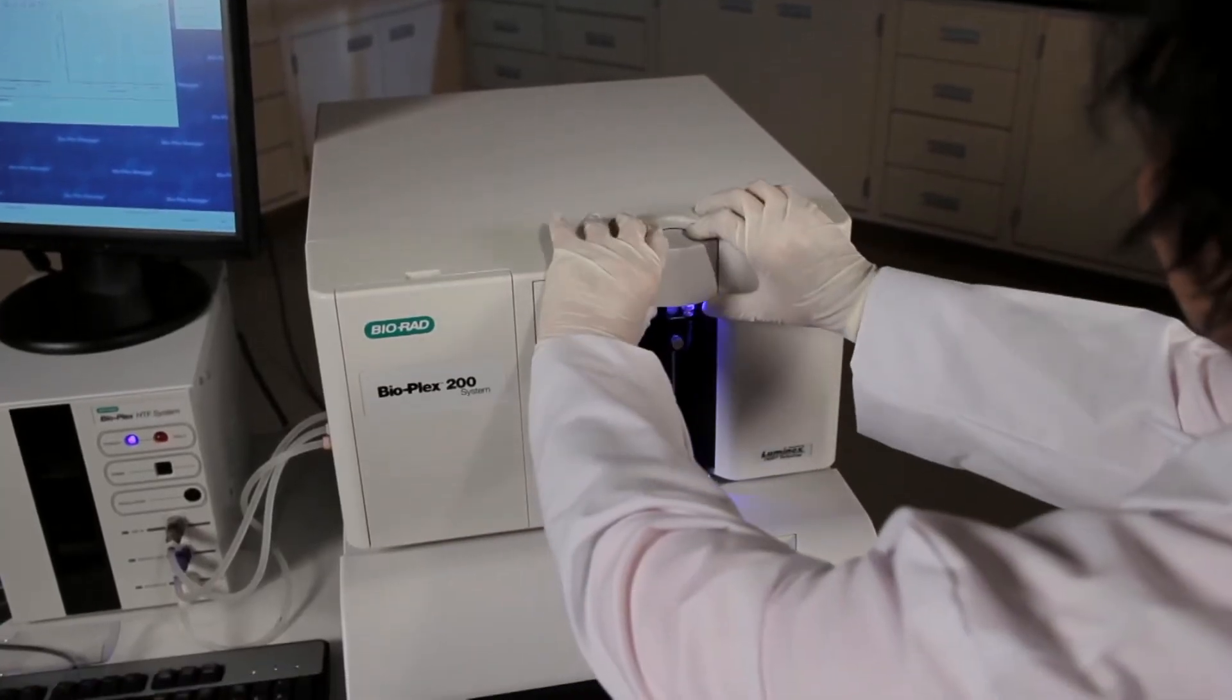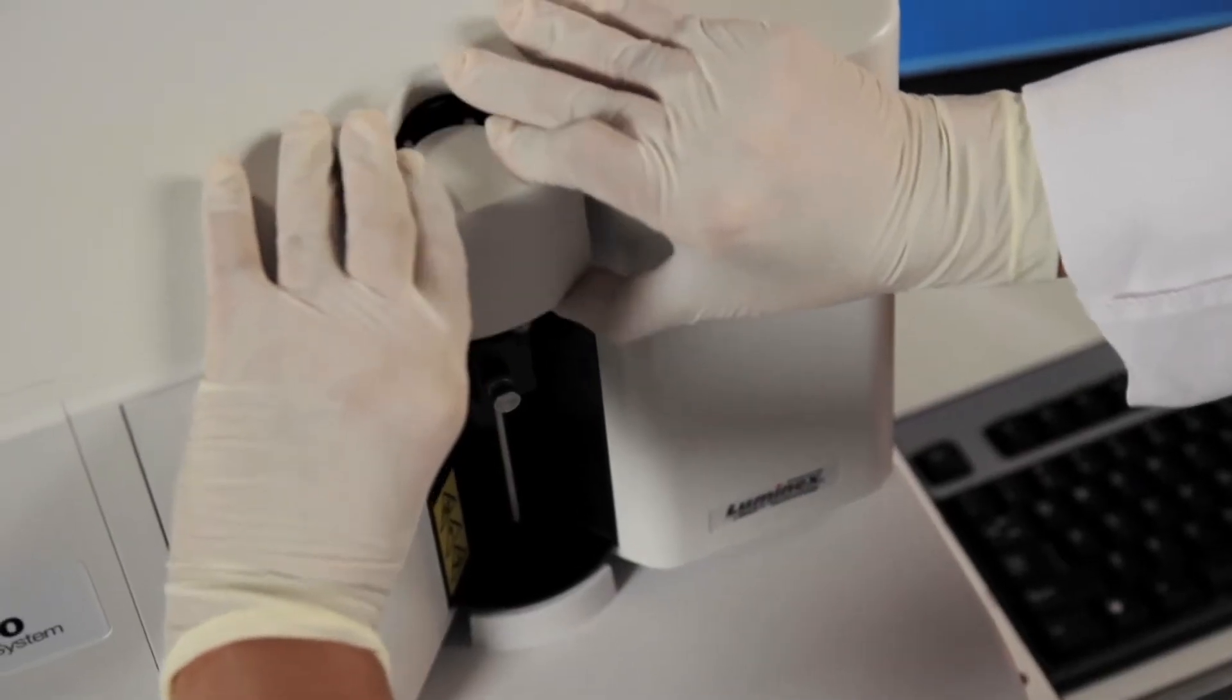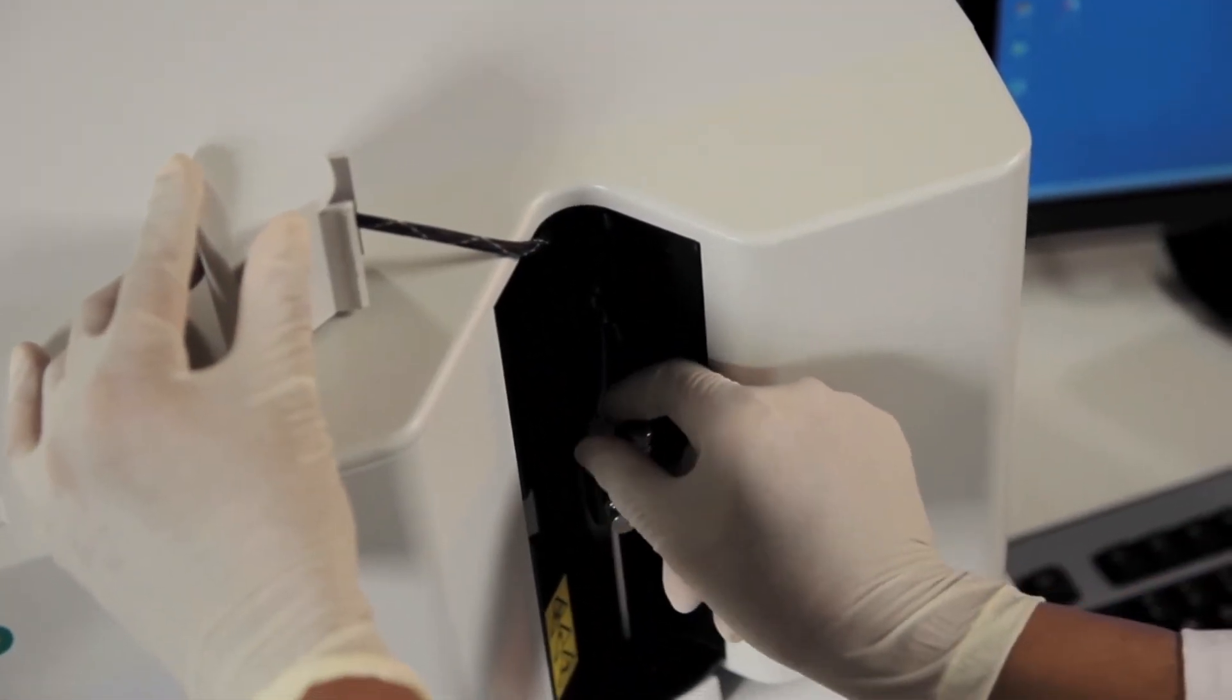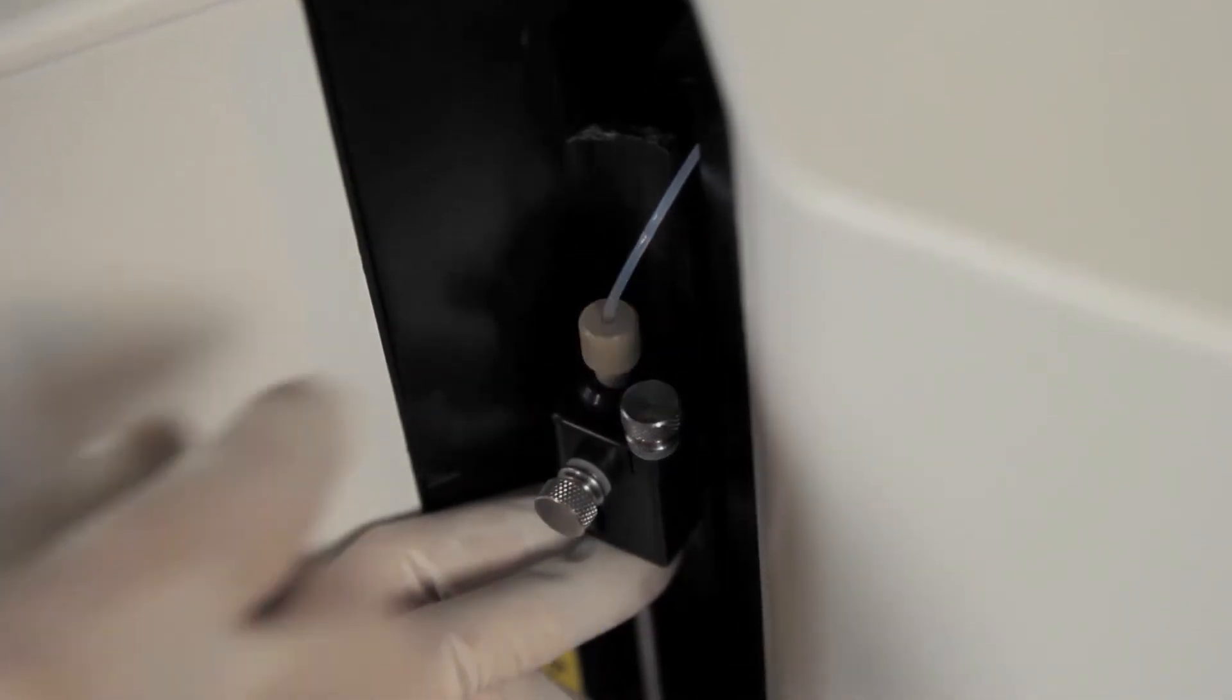Remove the light housing directly above the needle by grasping firmly and pulling out. The housing will remain attached to the main unit by a wire. Place the housing on top of the reader and out of your way.